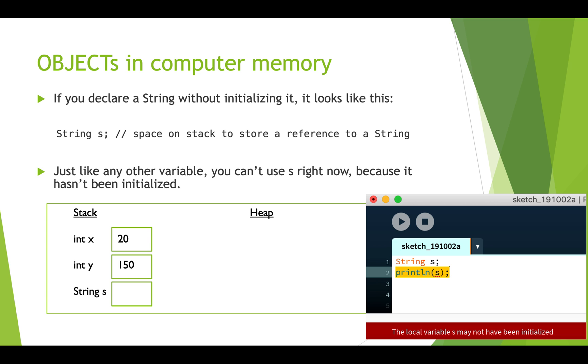So when we declare a string without actually initializing it, without putting any text into it, it looks like this. We get the spot on the stack, but it's empty. There's nothing in it. And then we can't actually use s because just like other variables, if you haven't put a value in it, it's not usable. So if we try to do this in processing, string s and then print on s, it will give us an error and say that that variable has not been initialized.